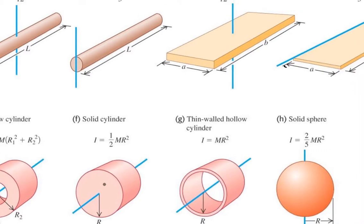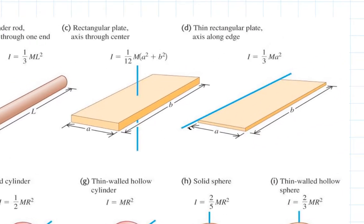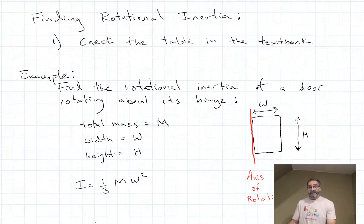But let's get back to our problem. We're trying to find the rotational inertia of a door, so we're going to use one-third M W squared, the width of the door squared. So this is step number one in finding the rotational inertia — just check the table. We got lucky, it was in the table, we're done.